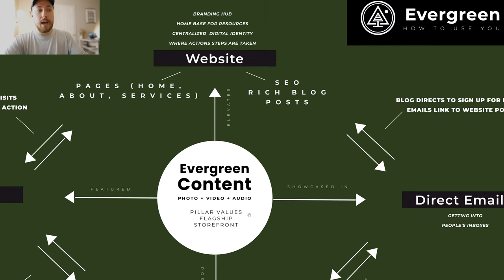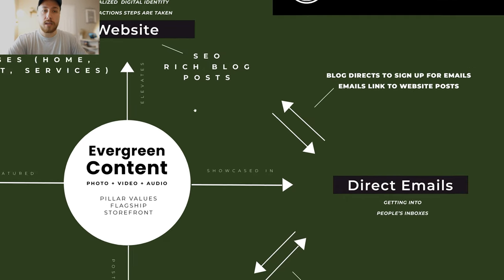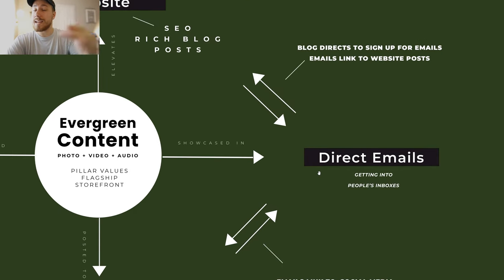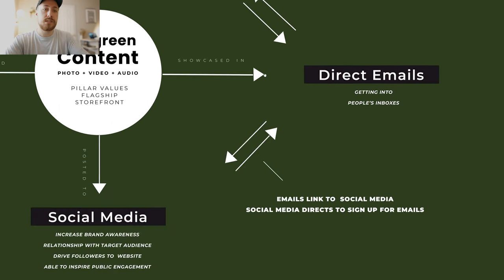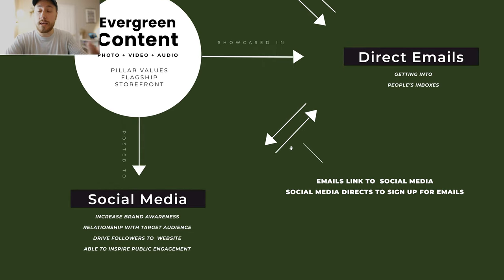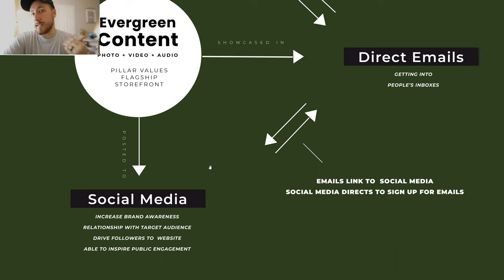To reiterate: your evergreen content is landing on every page of your website, being showcased in your direct email list where each email links back to a blog post, your emails are prompting people to check out your social media, and vice versa — your social media goes back to your email and website. Your call to action in social media is either to engage with the post or to visit links that go back to your email list or website so that people can take action steps.